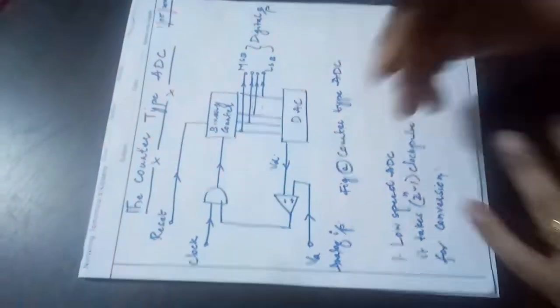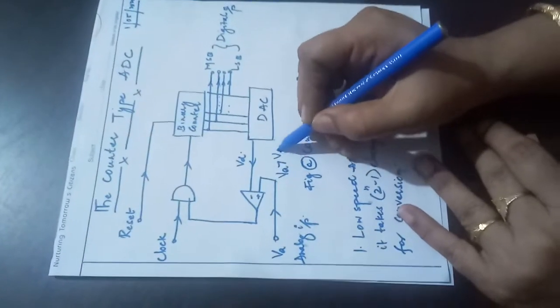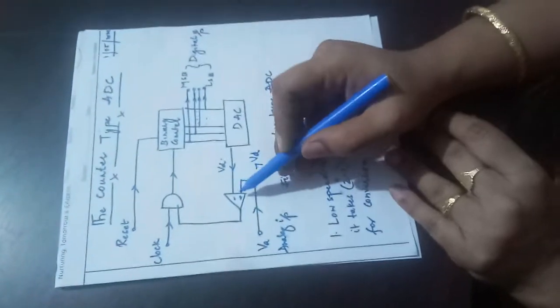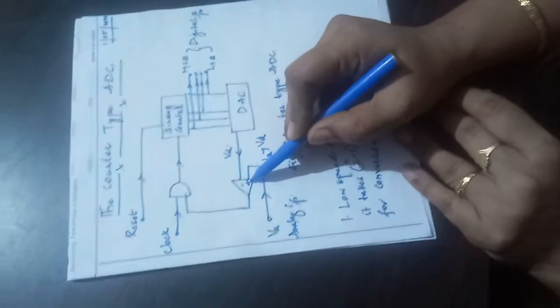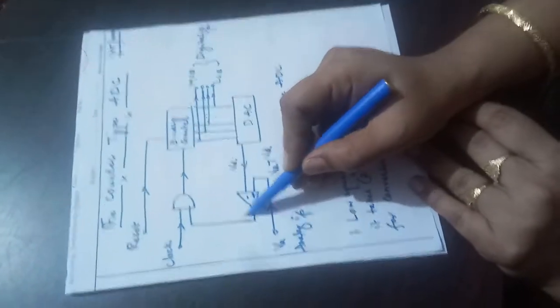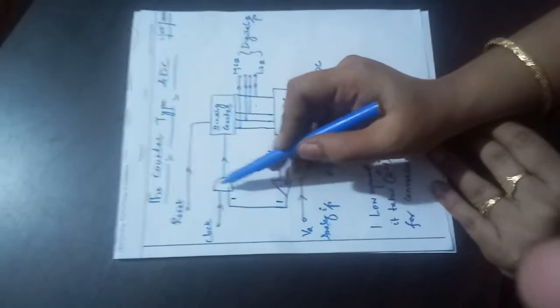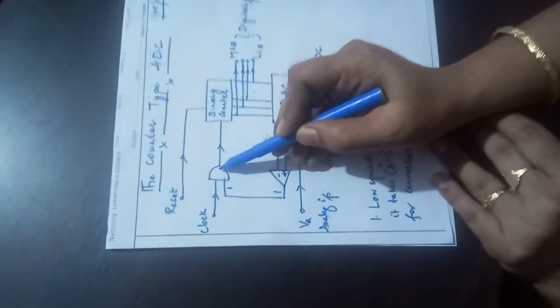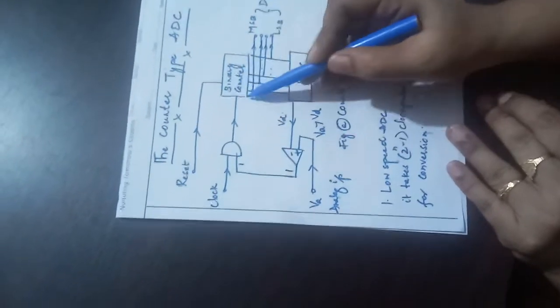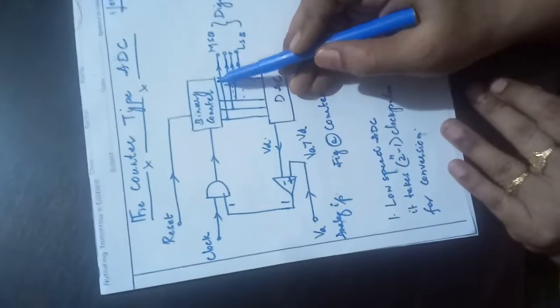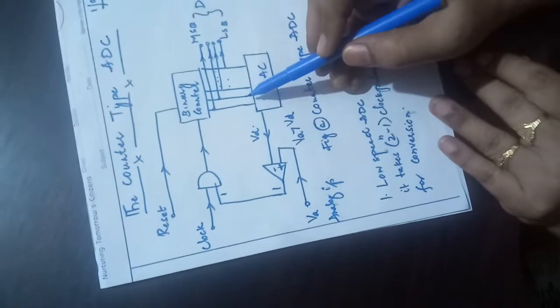As long as VA is greater than VD — VA is applied to the non-inverting terminal — when VA is greater than VD, the comparator output is high. This high output is given to the AND gate, so the AND gate is enabled. The clocks are fed to the binary counter, and the binary counter continues to count the pulses — this process goes on as long as VA is greater than VD.